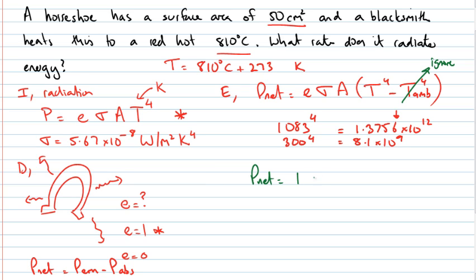My E was 1. I've got my Stefan-Boltzmann constant, 5.67 by 10 to the minus 8, multiplied by my area. Now note my area is in 50 centimeters squared. Stefan-Boltzmann's constant is in meters squared. So how do I convert 50 centimeters squared to meters squared?